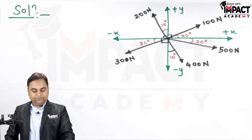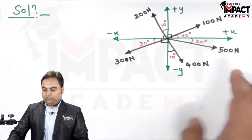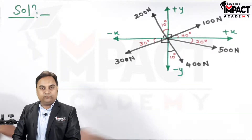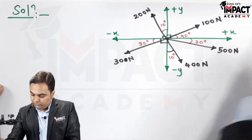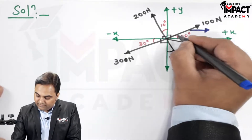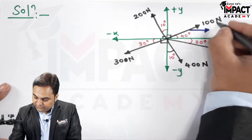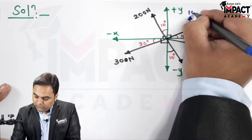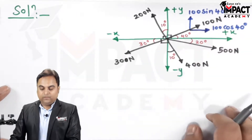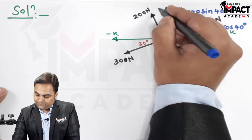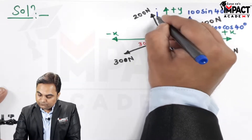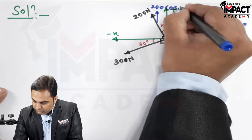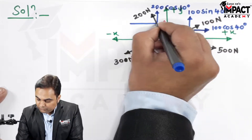In mechanics, we never keep forces inclined when finding the resultant — we resolve them. For the 100 N force at 40° to horizontal: horizontal component = 100 cos 40°, vertical component = 100 sin 40°. For 200 N at 10° from vertical: vertical component = 200 cos 10°, horizontal component = 200 sin 10°.